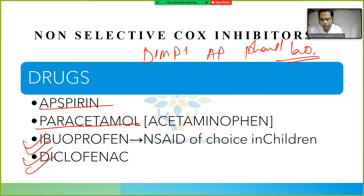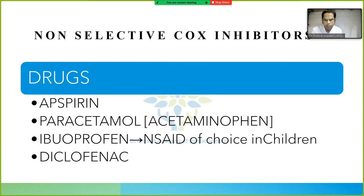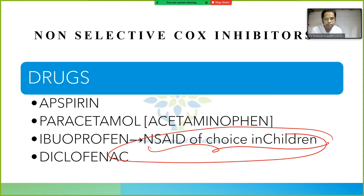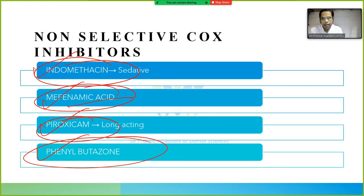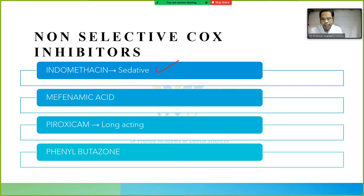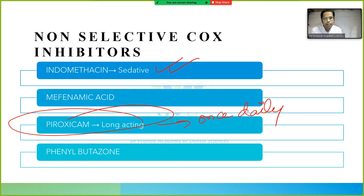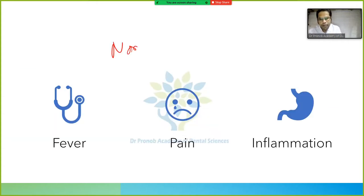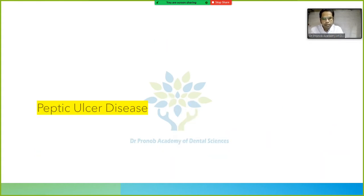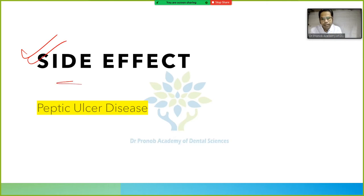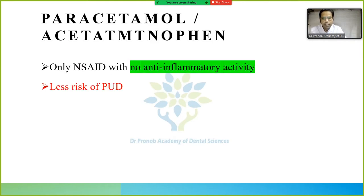Ibuprofen is the drug of choice in children. Paracetamol's other name is acetaminophen — remember this as an MCQ. Indomethacin has sedative properties. Piroxicam is long-acting and given only once daily. Non-selective COX inhibitors are used in fever, pain, and inflammation, and their main side effect is peptic ulcer disease.